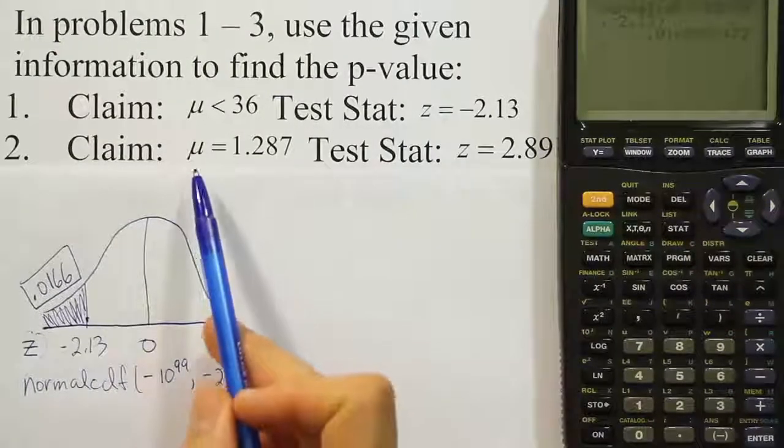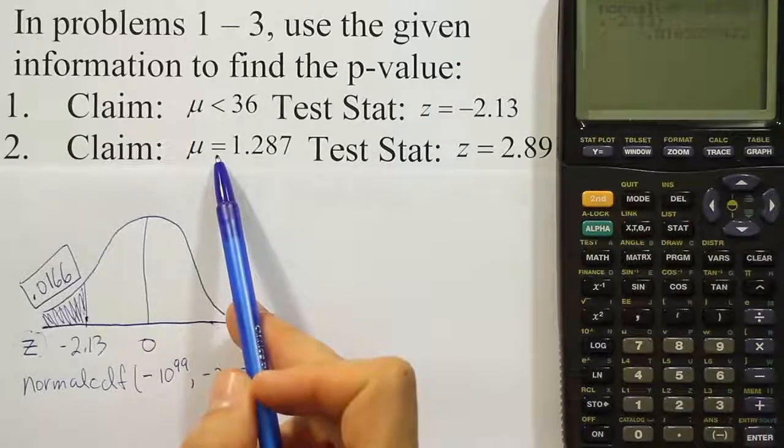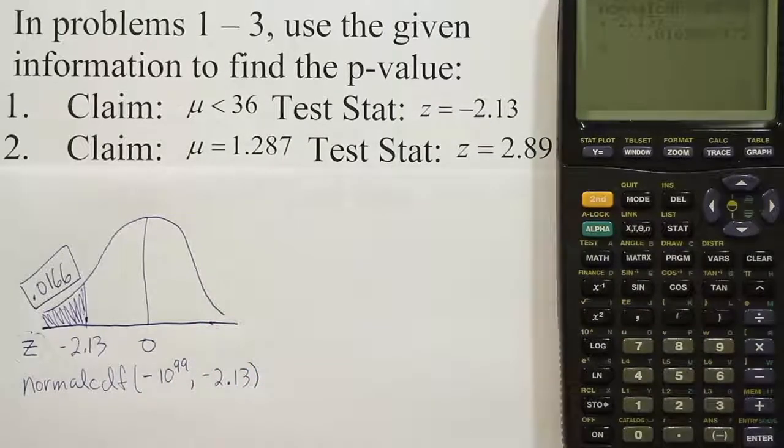So we're working with the mean equal to 1.287 as our claim, but the equal to here for H0 implies that HA is not equal to, so we have a two-tail test and we have a test stat of 2.89.